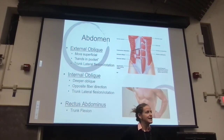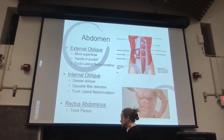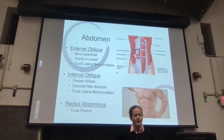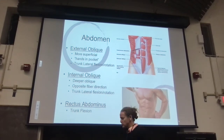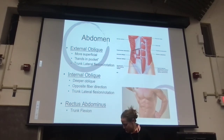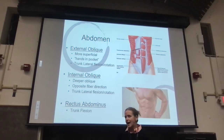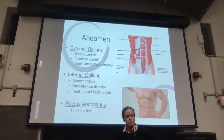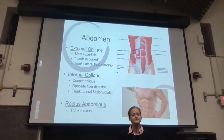If I'm rotating to my right, it's my right external oblique contracting on that side — remember, external oblique goes down and in, so when I rotate that way, that muscle is getting shorter. When a muscle contracts, it gets shorter. So when I rotate my trunk to the right, the right external oblique and the left internal oblique are contracting. That's extra detail — but the key function is trunk rotation.